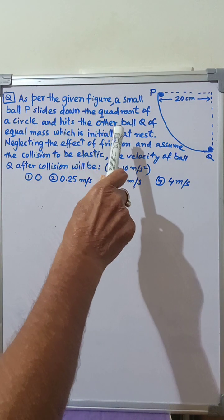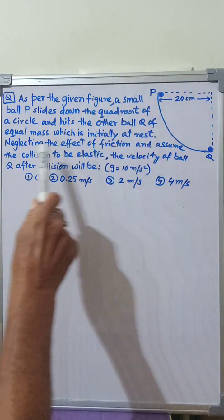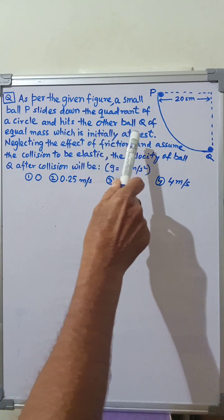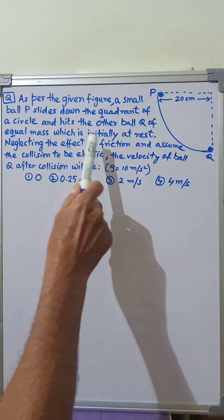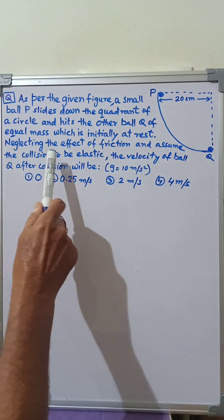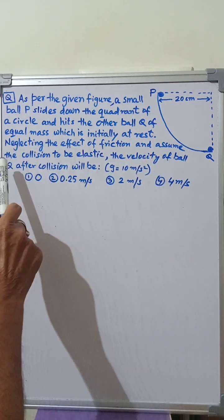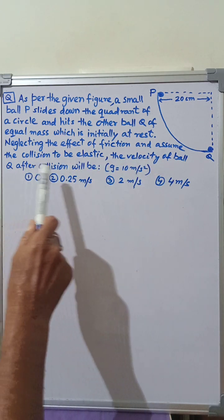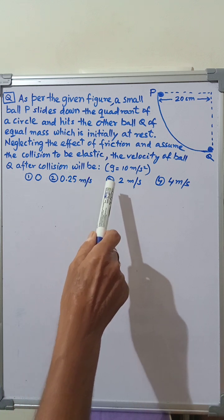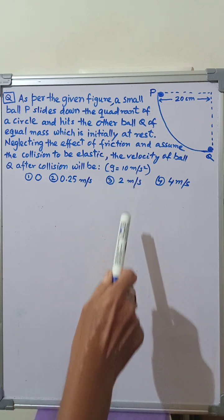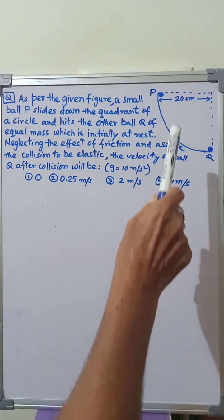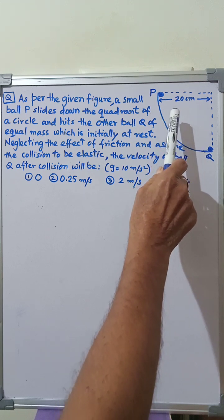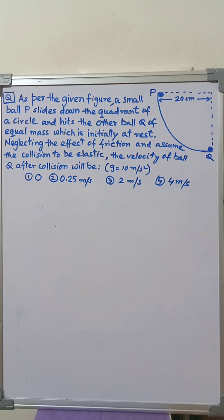As per the given figure, a small ball P slides down the quadrant of a circle and hits the other ball Q of equal mass, which is initially at rest. Neglecting the effect of friction and assuming the collision to be elastic, the velocity of ball Q after collision will be — take g equal to 10 meters per second squared. The radius of the circle is given in the figure as 20 centimeters.